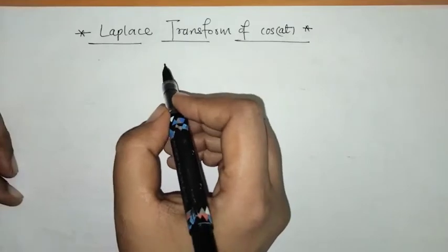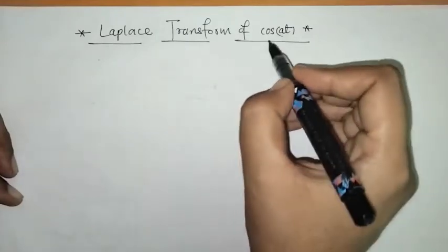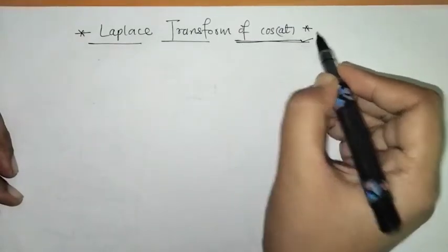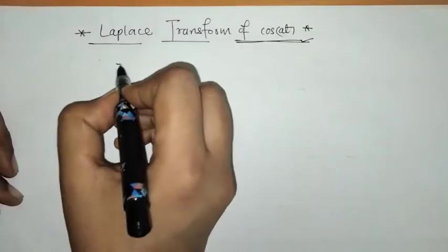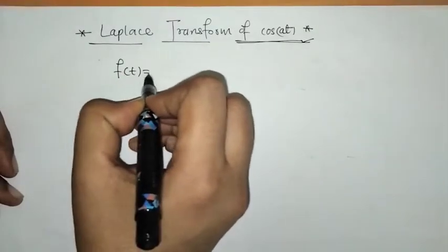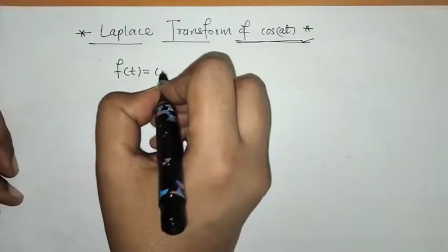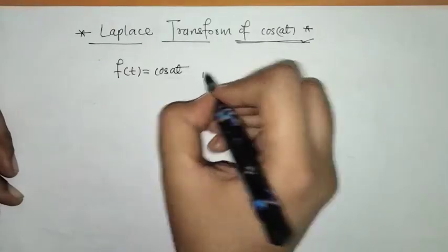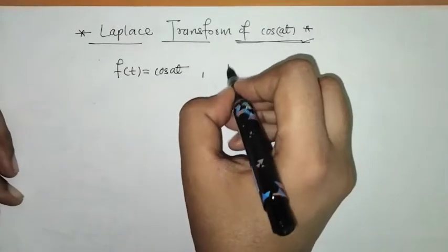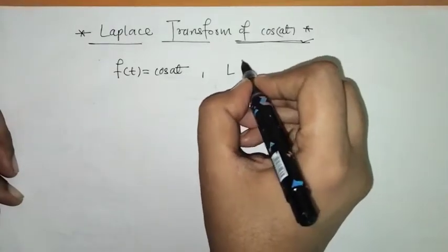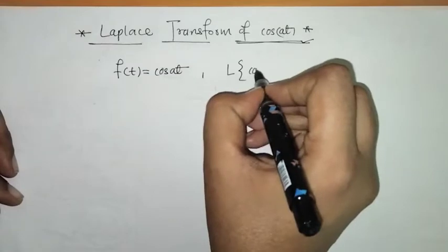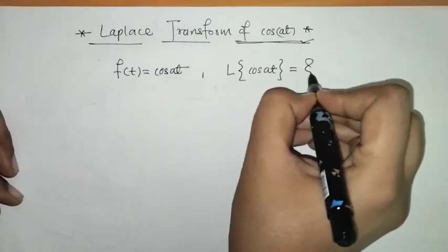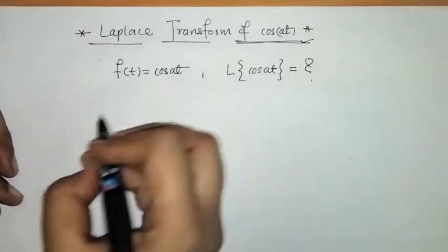Hello everyone, welcome to Unlock Maths. Today we have to find the Laplace transform of cos(at). We have given f(t) = cos(at), where a is a constant, and we need to find the Laplace of cos(at).